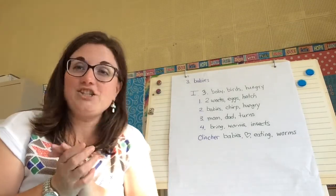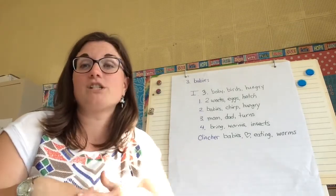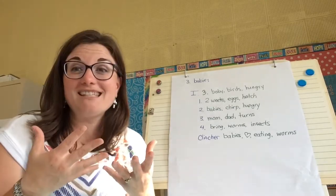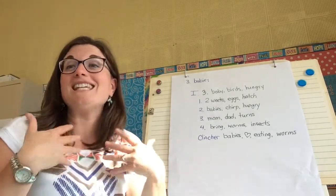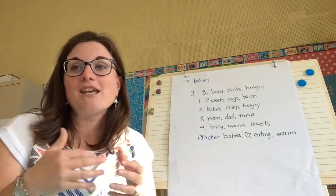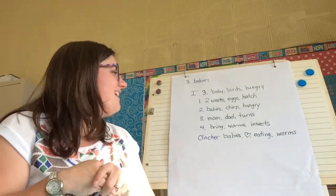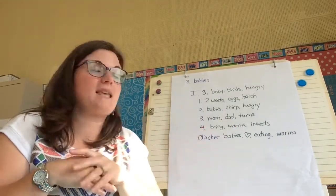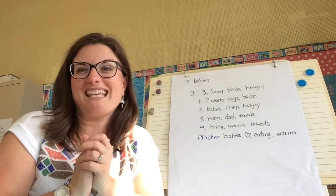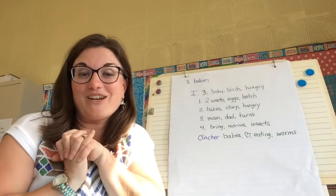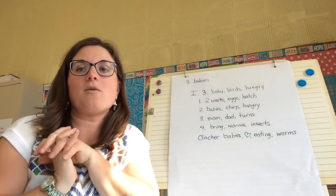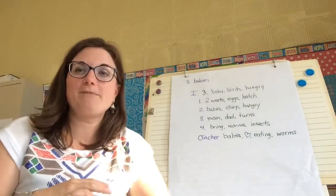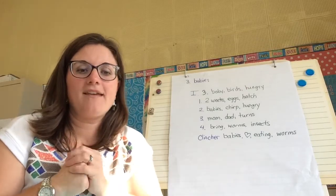For a quality adjective — a word describing — you could describe the babies: 'three cute' or 'three handsome.' You could describe the worms: 'they brought delightful worms because the birds were very hungry.' An adjective is a describing word.